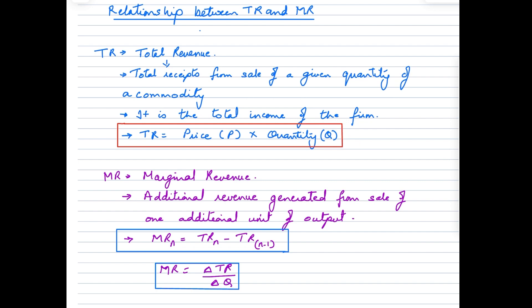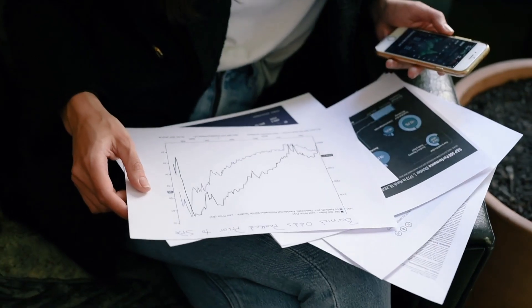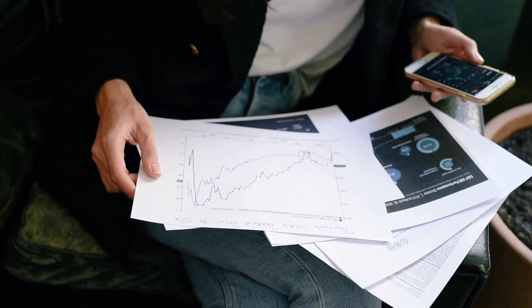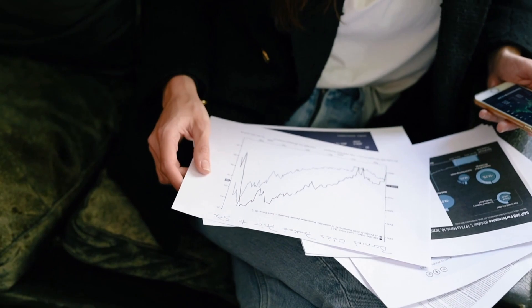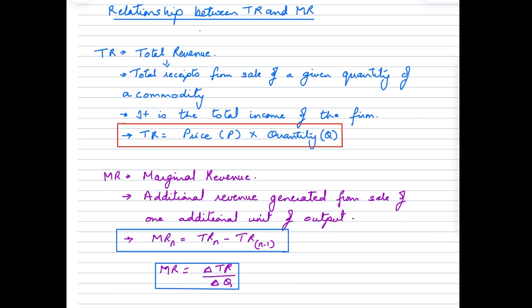MR, on the other hand, stands for Marginal Revenue, and it refers to the additional revenue generated by selling one additional unit of output. Throughout economics, the formula to calculate marginals is more or less the same. The formula is: MRₙ = TRₙ - TRₙ₋₁, or alternatively, we can calculate it as change in Total Revenue over change in Quantity.